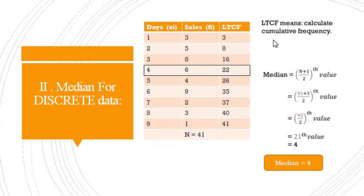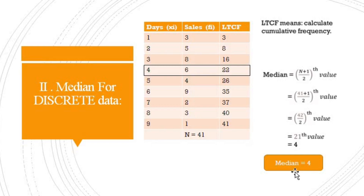With the less than cumulative frequency calculated, we apply: Median = ((N + 1) / 2)th value = (41 + 1) / 2 = 42 / 2 = 21. We find the cumulative frequency just greater than 21, which is 22. The corresponding variable value is 4. So median is equal to 4.